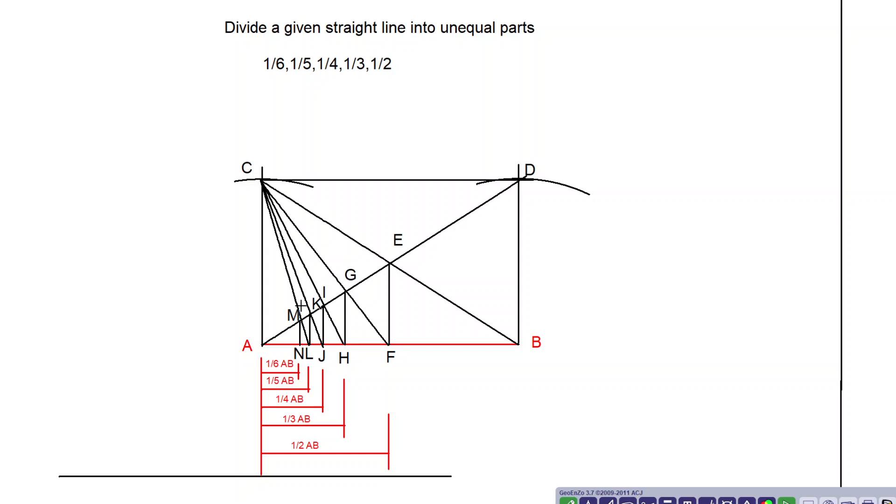Now this distance we see here. This AK distance will be nothing but one-sixth of AB. AL distance will be one-fifth of AB. AJ distance will be one-fourth of AB. AH distance will be one-third of AB. AF distance will be one-half of AB.